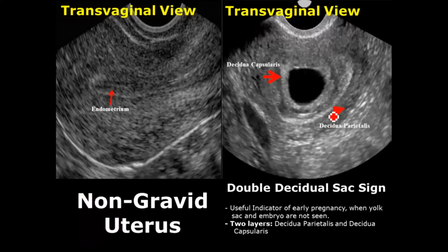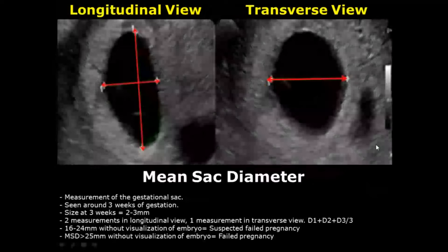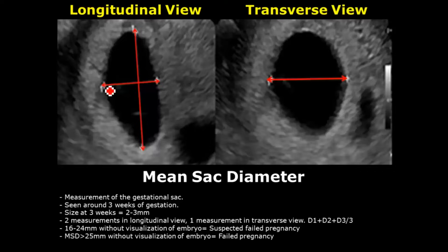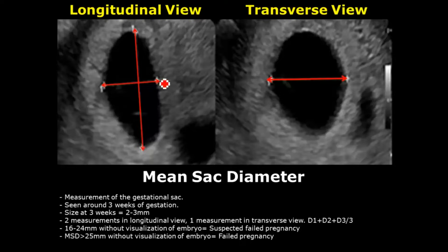The double decidual sac sign is a useful indicator of early pregnancy when the embryo and yolk sac are not seen. It consists of two layers: the outer layer is the decidua parietalis lining the uterine cavity, and the inner layer lines the gestational sac. It is measured by taking two measurements in the longitudinal view and one measurement in the transverse view, then adding these three values and dividing by three to get the mean sac diameter.